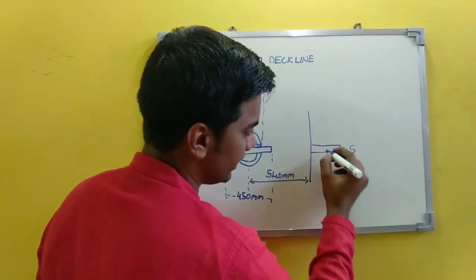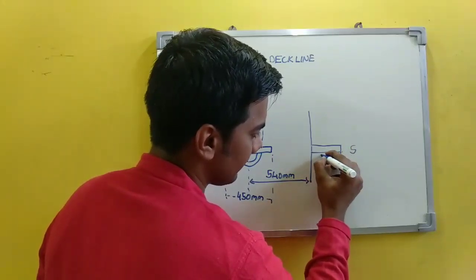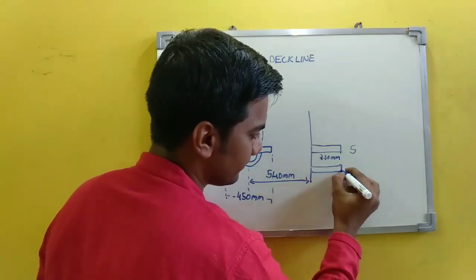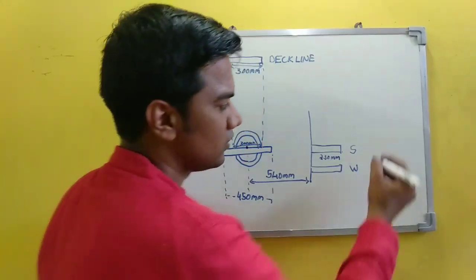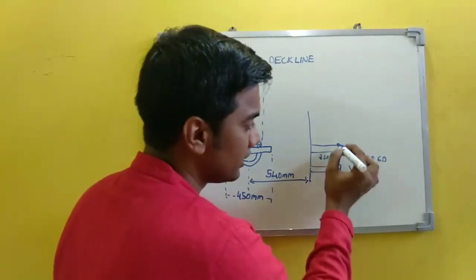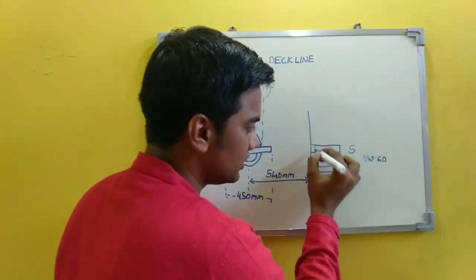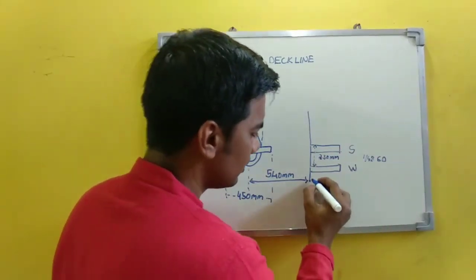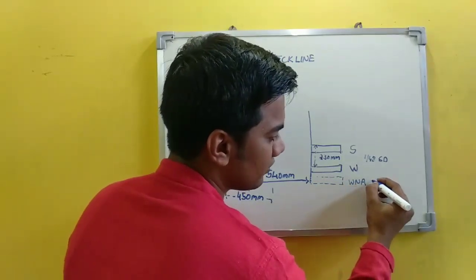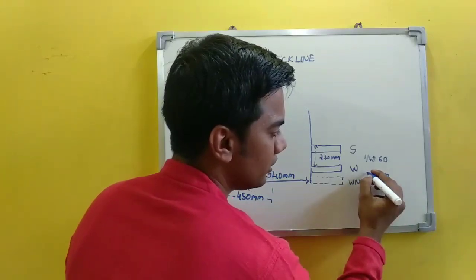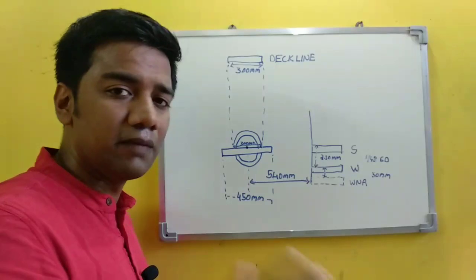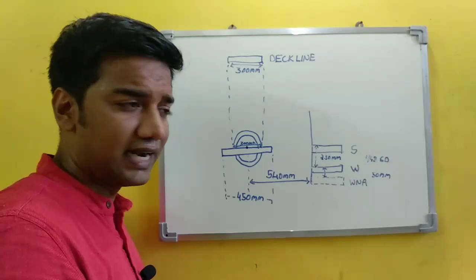Below the summer load line is the winter load line. The distance between the summer load line and the winter load line — measured from the upper edges — is 1/48th of the summer draft. Below the winter load line is the Winter North Atlantic load line, which is 50 mm below winter, measured from the upper edges. The Winter North Atlantic load line applies only to ships less than 100 meters which sail in the North Atlantic region during the winter season.